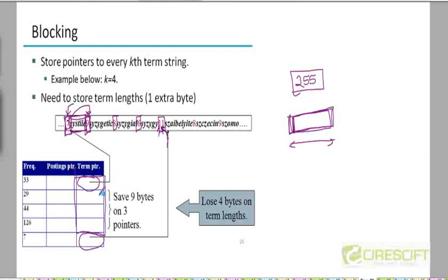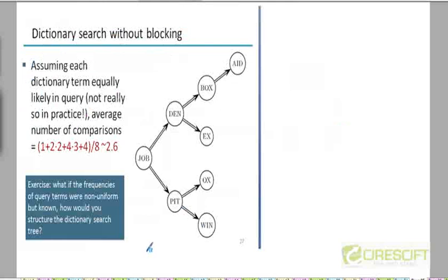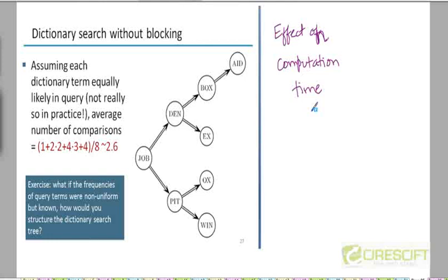The second level of compression was achieved by blocking terms into chunks of four each. To drive home the point that on average we will be spending more time searching for strings, here is a comparison of what would happen to computation time as a result of this compression. Note that whenever you compress data, it's going to take extra time to decompress it. On the other hand, you are saving space, which is the goal. This extra computation time may be tolerable, but it shouldn't increase too much.